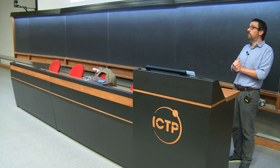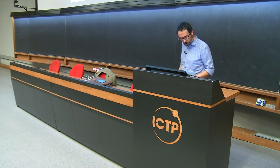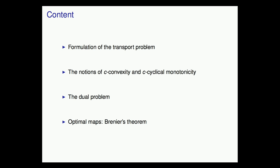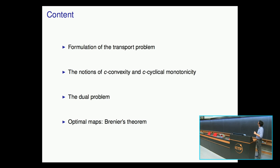This means I really stick to the basics, so hopefully many of you will come away having learned something new. Maybe some of you will be bored — I apologize to those who already know optimal transport. I will cover: what optimal transport is in a general framework; the notions of C-convexity and C-cyclical monotonicity; the dual problem; and Brenier's theorem on existence of optimal maps in Euclidean space. Feel free to interrupt me with questions at any moment.